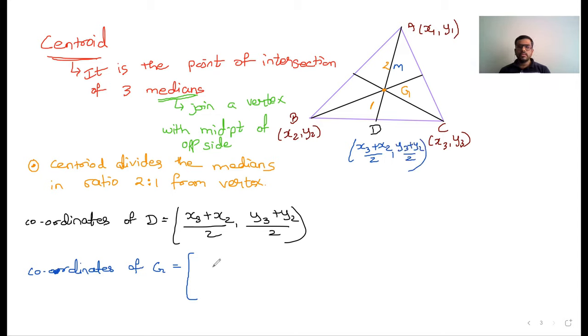So 1 into coordinates of D, that is X3 plus X2 upon 2, plus 2 into coordinate of A, that is X1, divided by 2 plus 1. Same thing for y-coordinate: 2 into Y3 plus Y2 upon 2, plus 1 into Y1, divided by 2 plus 1. Here 2 and 2 will get cancelled.